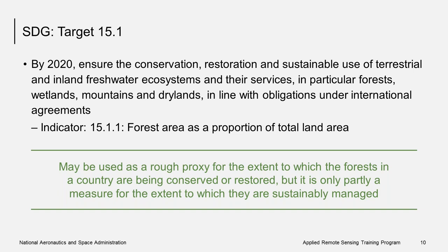Forests fulfill a number of functions that are vital to humanity, including the provision of goods and services such as habitat for biodiversity, carbon sequestration, coastal protection, and soil and water conservation. Indicator 15.1.1 provides a measure of the relative extent of forest in a country. The availability of accurate data on a country's forest area is a key element for forest policy and planning within the context of sustainable development. Changes in forest area reflect the demand for land for other uses and may help identify unsustainable practices in the forestry and agriculture sector. This indicator may be used as a rough proxy for the extent to which the forests in a country are being conserved or restored, but it is only partly a measure for the extent to which they are more sustainably managed.